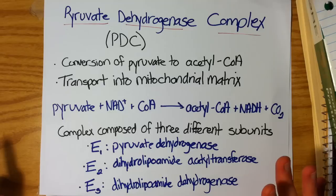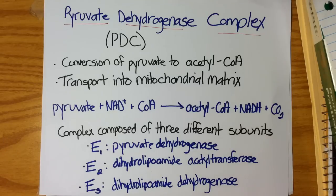The E2 subunit is called dihydrolipoamide acetyltransferase, and E3 is dihydrolipoamide dehydrogenase. The names sound complicated and long, but these names describe exactly what they do, and you will see that with our mechanisms.